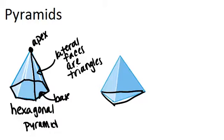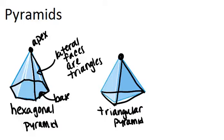If we look at the pyramid on the right, its base is a triangle so one name for this would be a triangular pyramid. And again all of its lateral faces are also triangles and all of those lateral faces meet up in one point.